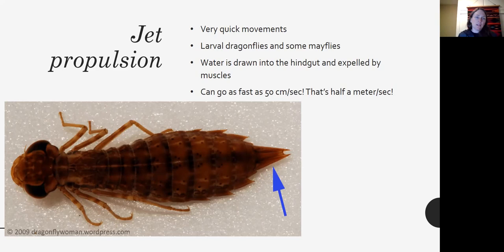You can see they don't really have great legs or hairy legs for swimming. And so this jet propulsion is a really quick method. They can move about a half a meter per second, which is really fast.